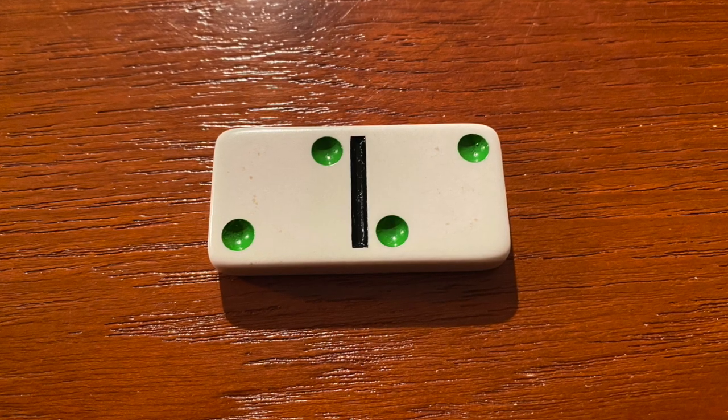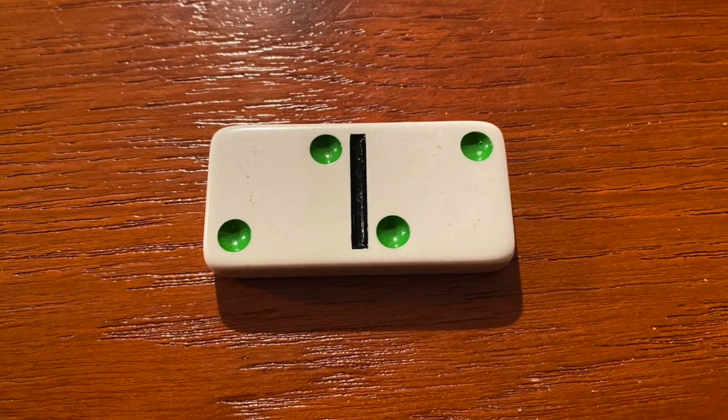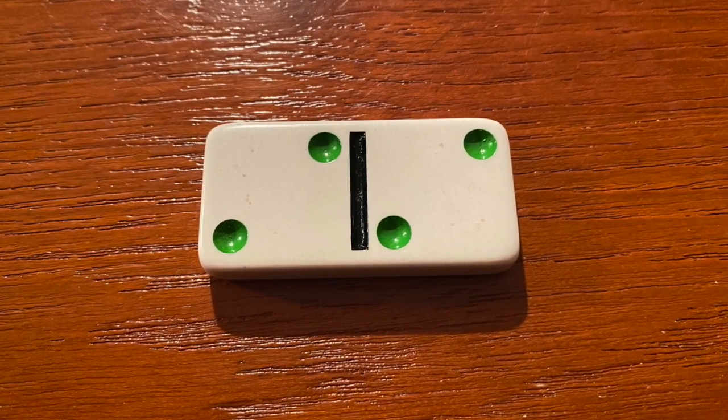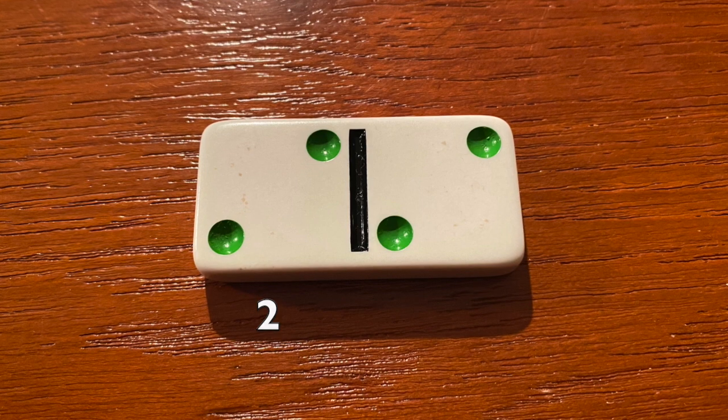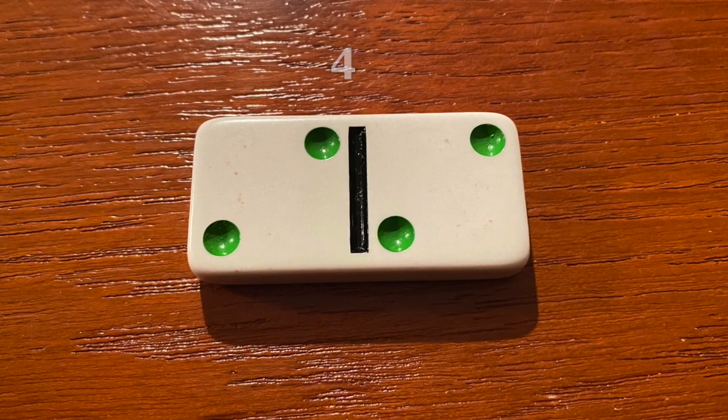A lot of fact families have two addition facts and two subtraction facts, but when the fact family has a pair of doubles there's only one of each. Let's look at this domino. After looking at both sides and then counting all of the dots we can see that the three numbers for this domino are two, two, and four.